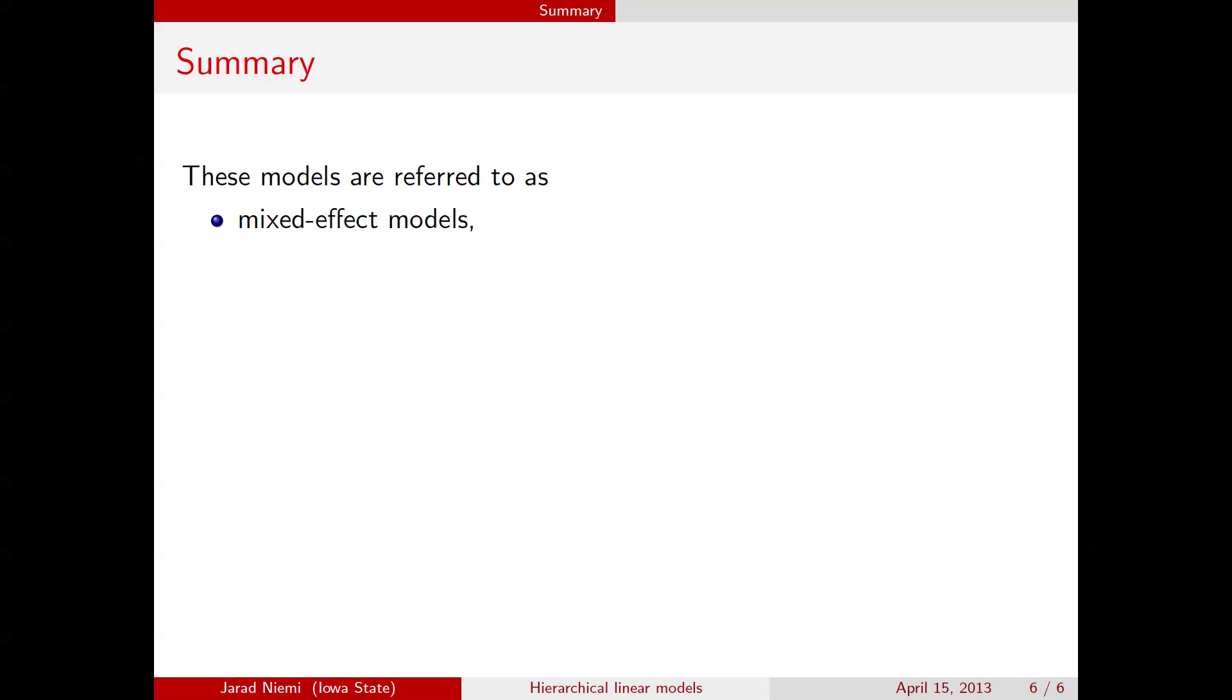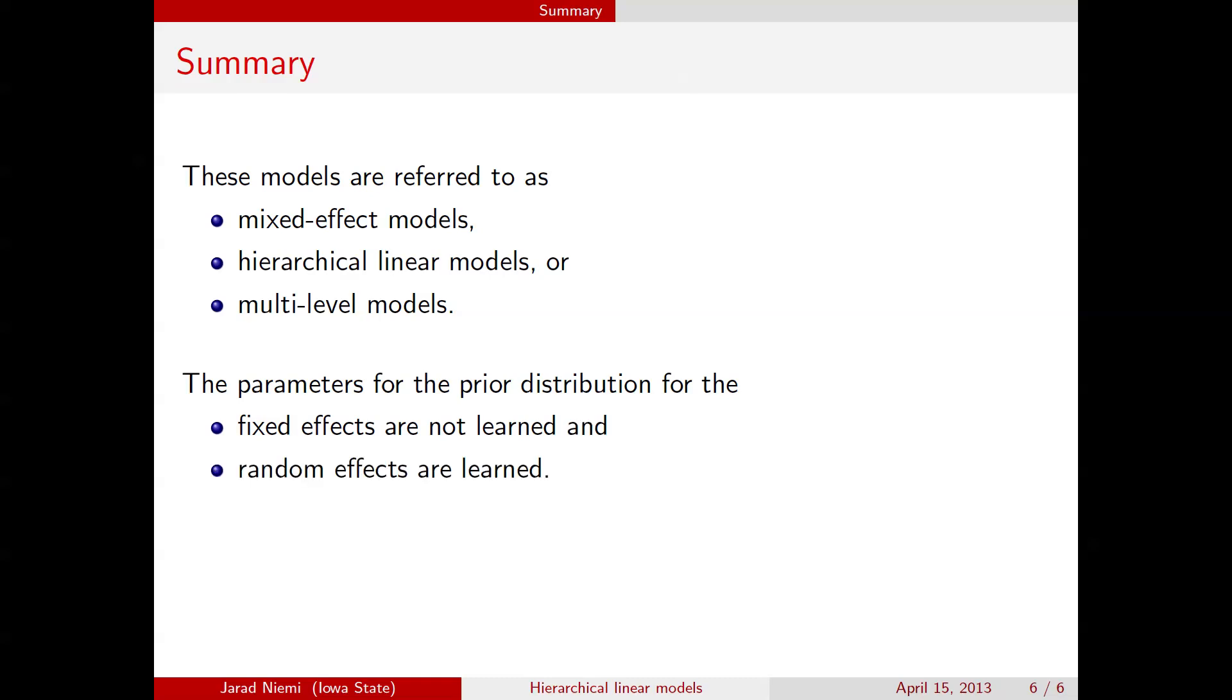So these models are often referred to as mixed-effect models or hierarchical linear models, sometimes as multi-level models. And again, just to reiterate, the key here is that the parameters for the prior distribution for the fixed effects are not learned, they're just set, whereas the priors for the random effects are themselves learned. And this corresponds exactly to somebody doing a non-Bayesian analysis where they're learning the variance parameter for the random effects. It's just that a non-Bayesian doesn't assign a prior to that variance parameter. Thanks.